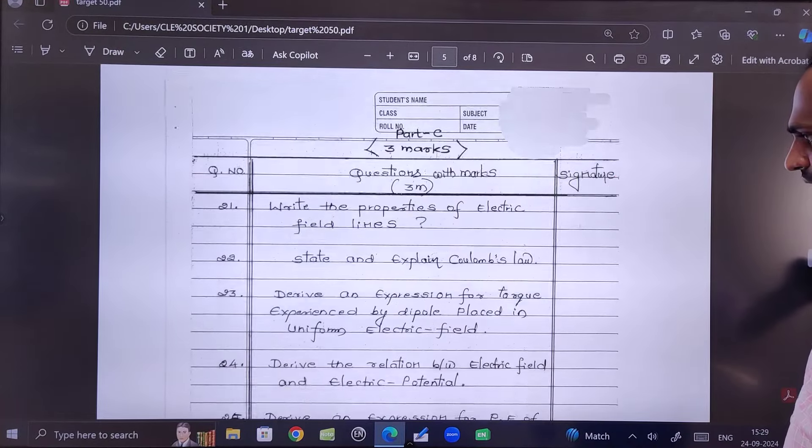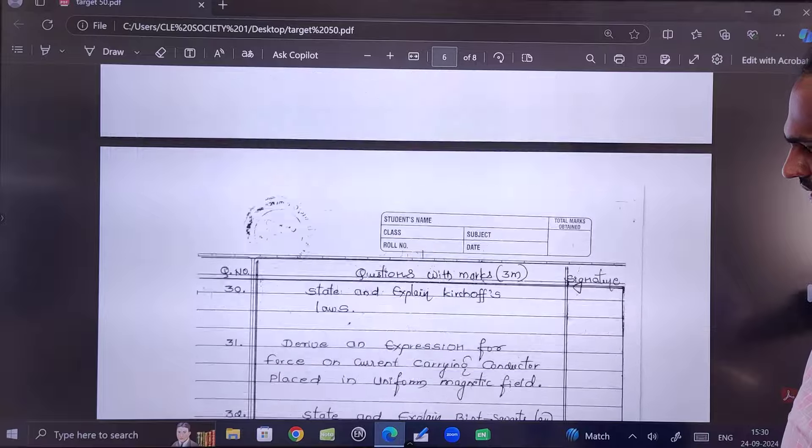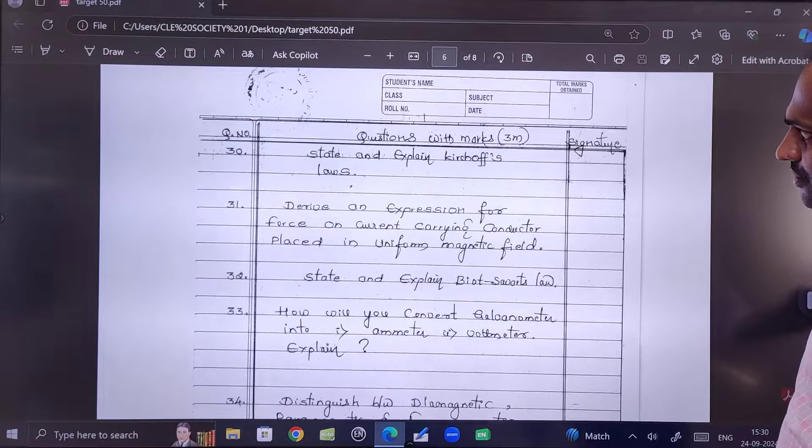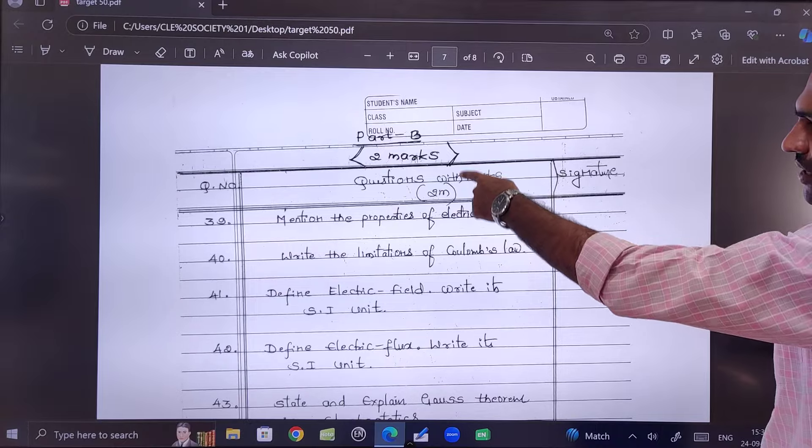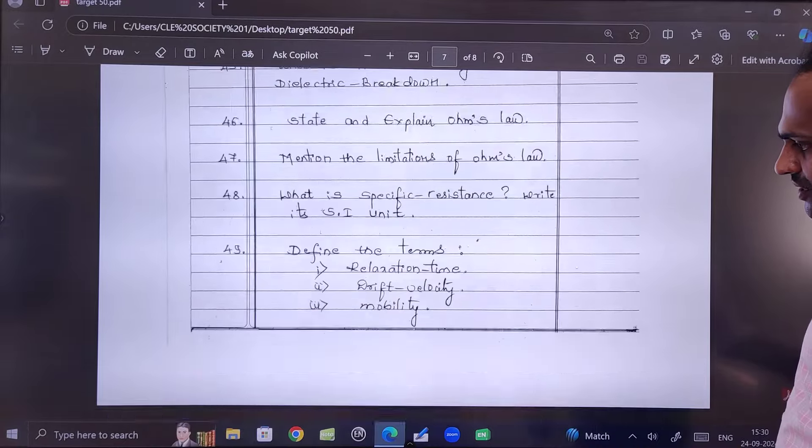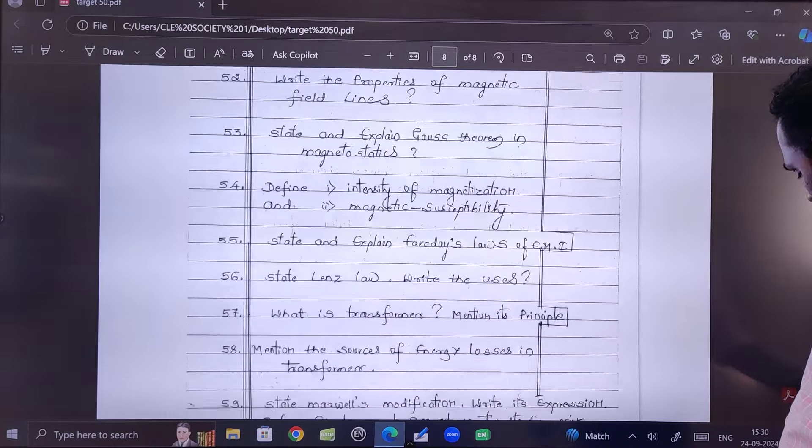Similarly, after that you will get two marks questions. Like this, I have sorted out the number of questions in Section B, Part B - the two marks questions.